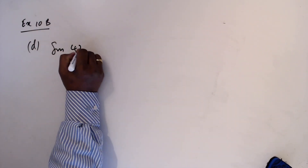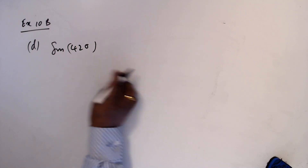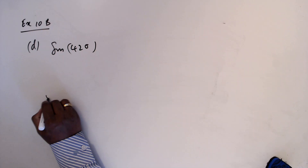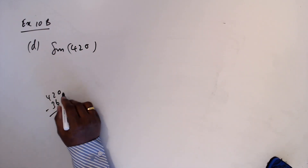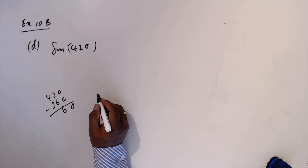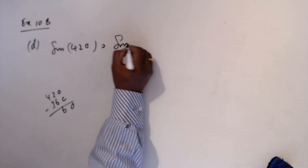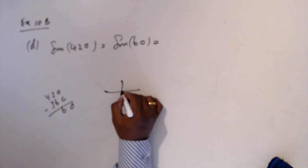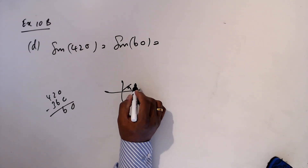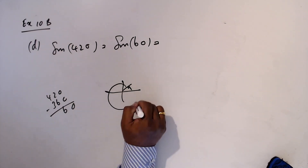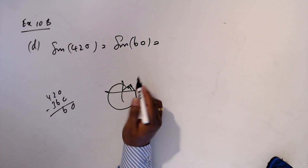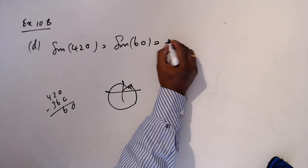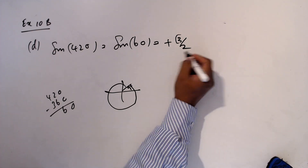D: sine 420. Since 420 is greater than 360, we subtract 360: 420 minus 360 equals sine 60. Sine 60 is in the first quadrant — one more full round, same place. In the first quadrant sine is positive, so the value of sine 60 is square root 3 over 2.